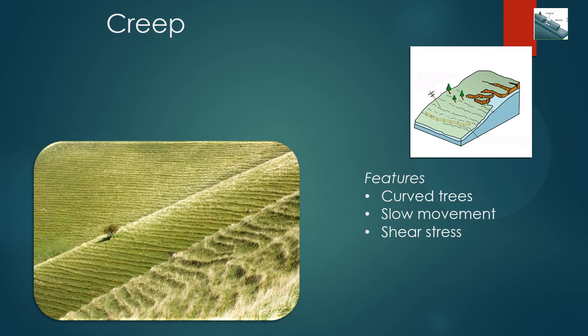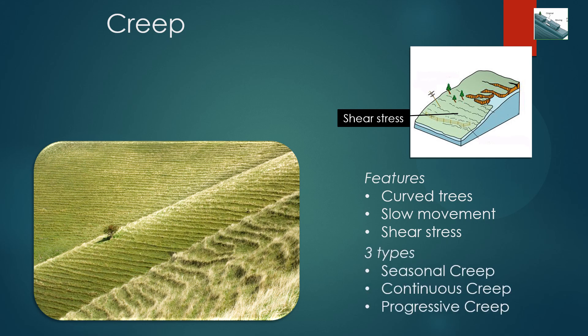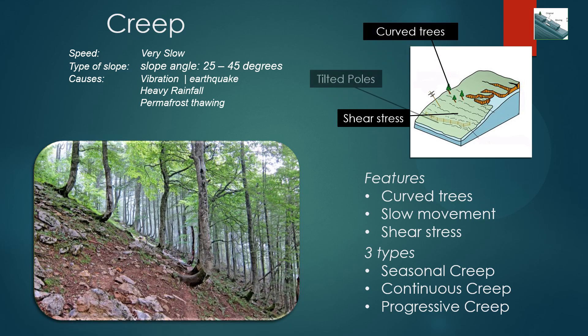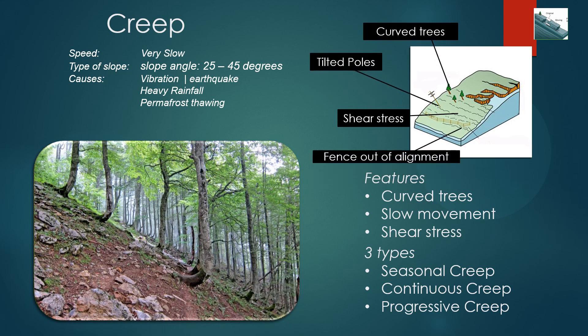Creep is the imperceptibly slow, steady, downward movement of sloping soil or rock. Movement is caused by shear stress sufficient to produce permanent deformation, but too small to produce shear failure. There are generally three types of creep: seasonal, where movement is within the depth of soil affected by seasonal changes in soil moisture and temperature; continuous, where shear stress continuously exceeds the strength of the material; and progressive, where slopes are reaching the point of failure as in other types of mass movements. Creep is indicated by curved tree trunks, bent fences or retaining walls, tilted poles or fences, and small soil ripples or ridges.